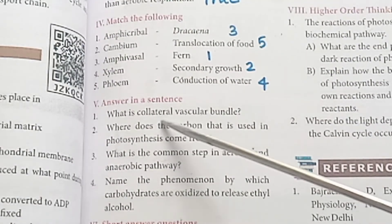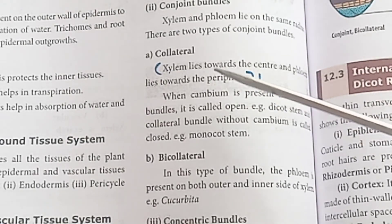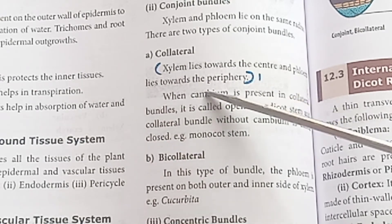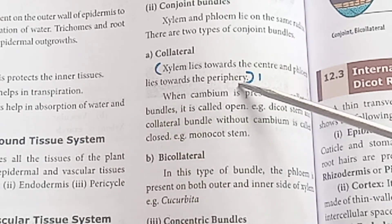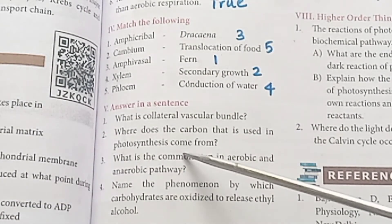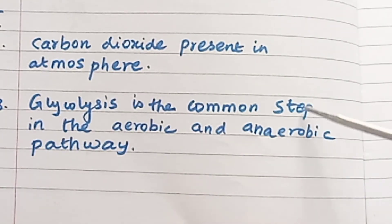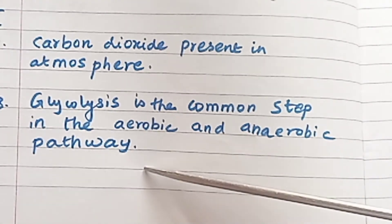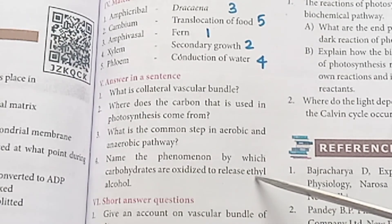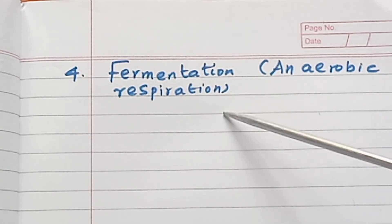Answer in a sentence. What is a collateral vascular bundle? In a collateral bundle, xylem lies towards the periphery. Where does the carbon used in photosynthesis come from? Glycolysis is the common step in aerobic and anaerobic pathways, in which carbohydrates are oxidized to release ethyl alcohol through fermentation and aerobic respiration.